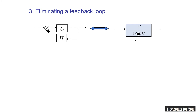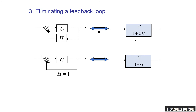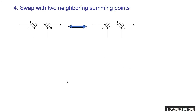The sign of the feedback is inverted: for positive feedback the denominator becomes 1 minus GH, and for negative feedback it becomes 1 plus GH. For a unity feedback loop where H equals 1, the resultant is simply G divided by (1 minus-plus G). This is the third rule.